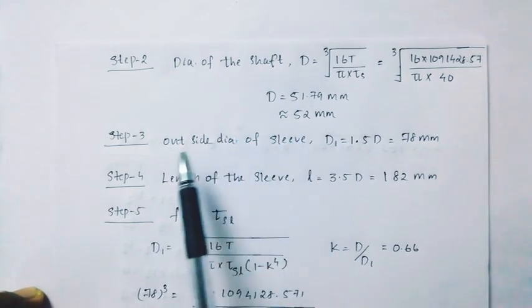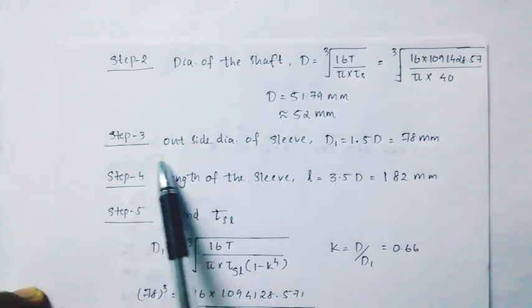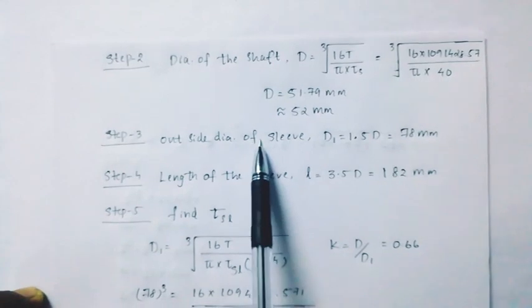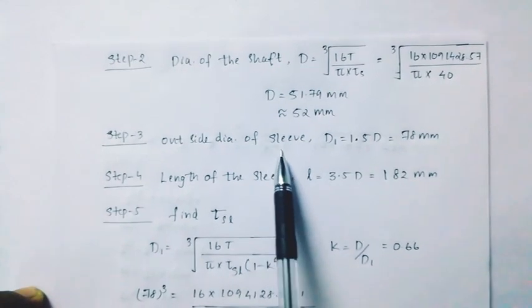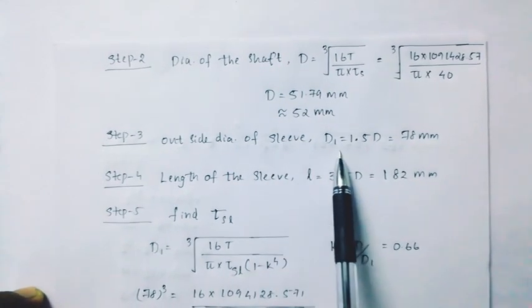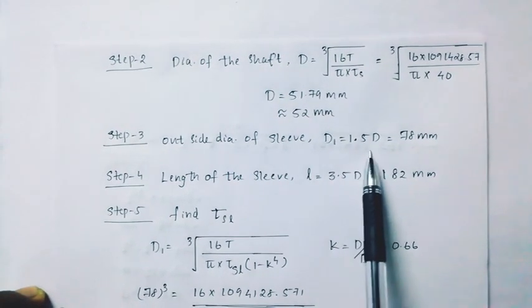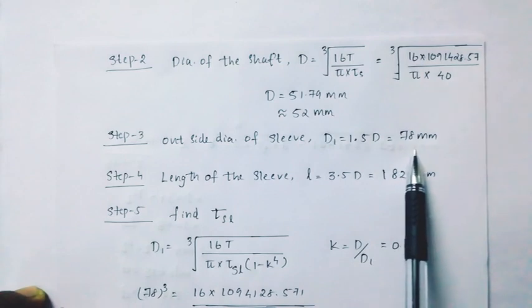Step 2: Calculate the diameter of the shaft. Step 3: Outer diameter of the muff. D1 = 1.5d, which gives 78mm.